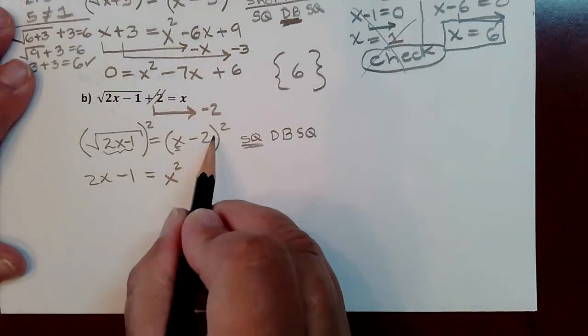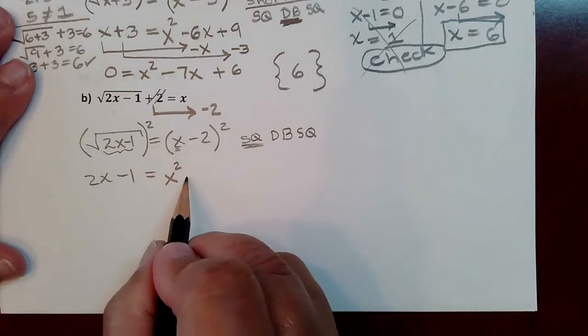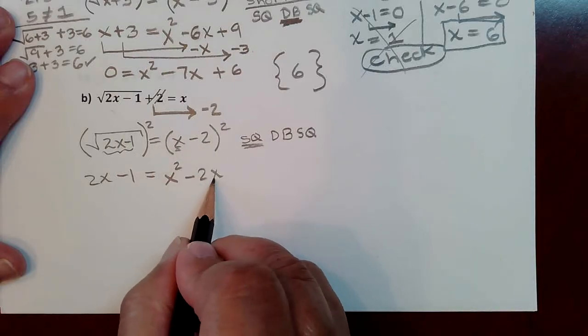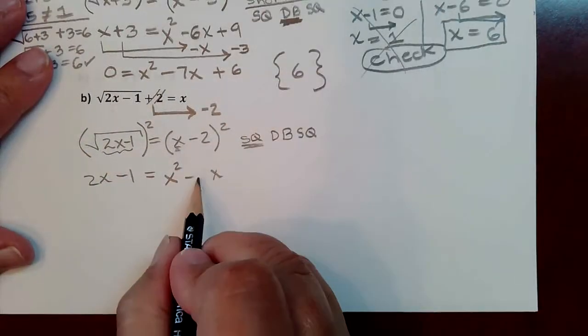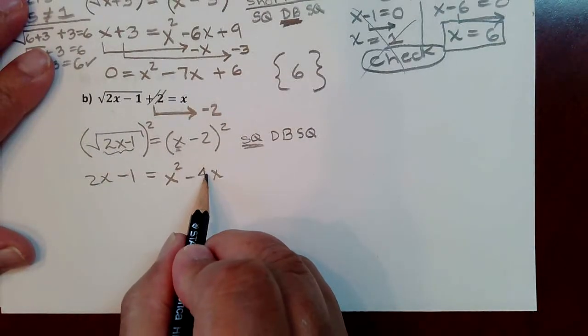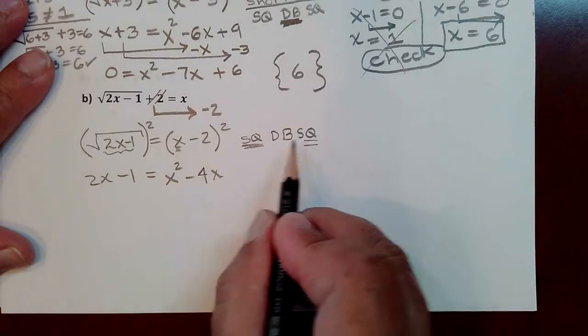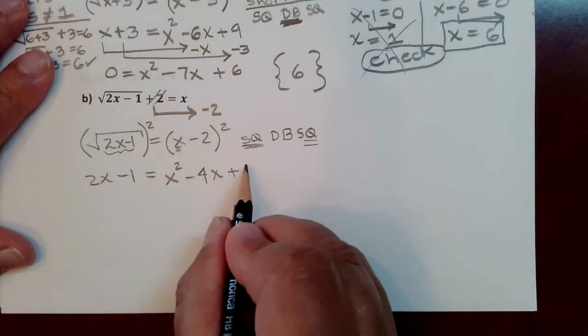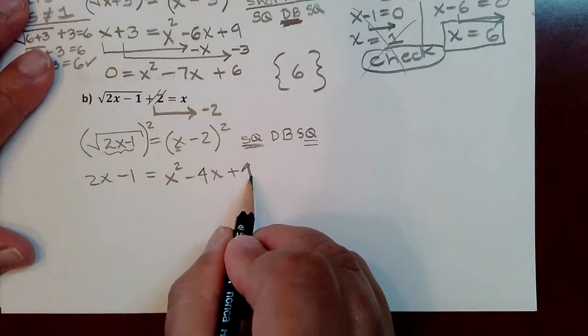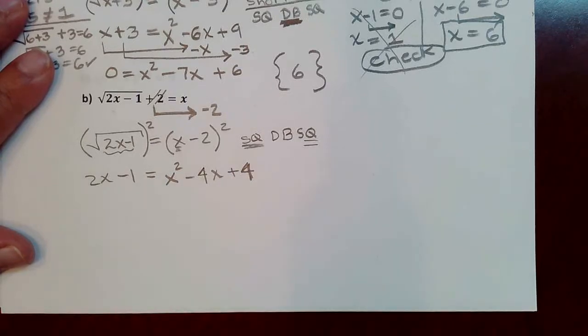I'm going to reinforce square double square as the shortcut for foiling. So square, that means square this front term right here. Double, that means take this number negative 2 and multiply it by x, but then double this number. Doubling means multiply by 2, so that would turn that into a 4. And then when you square again, that means you're squaring the back term. Negative 2 squared would be positive 4.